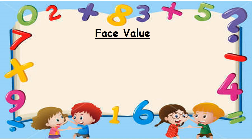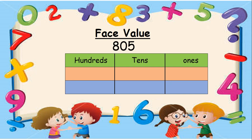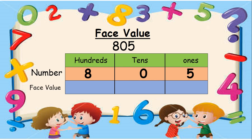Now let us solve one more example. Look at the number 805. Let us place each number in its respective column: number 8 goes in the 100s column, 0 goes in the 10s column, and number 5 in the 1s column. So the face value of digit 8 is 8 itself. The face value of 0 is 0 only. And the face value of 5 is 5 only. Excellent.